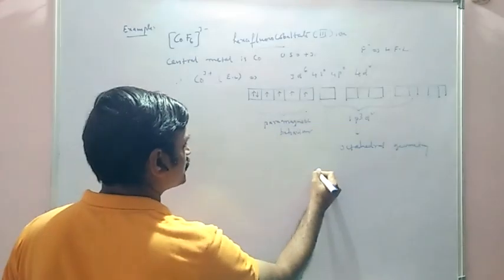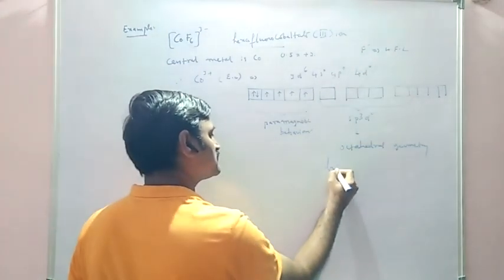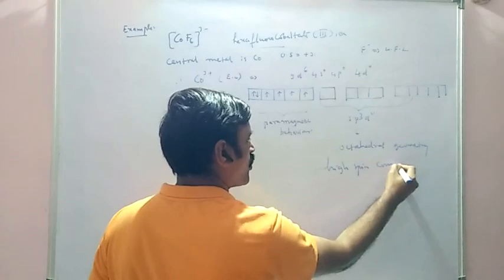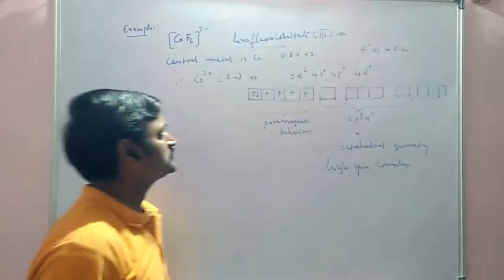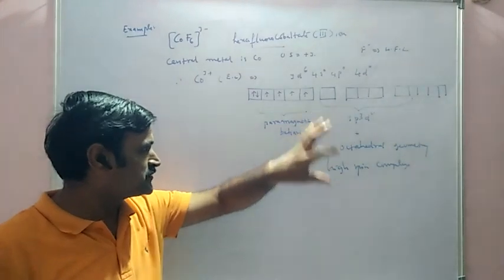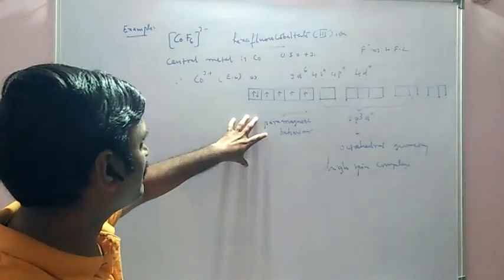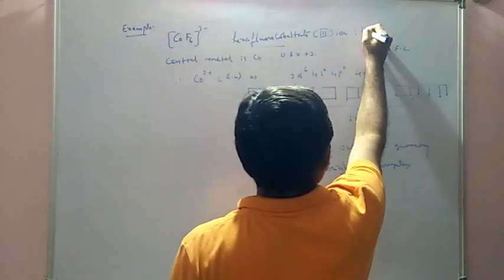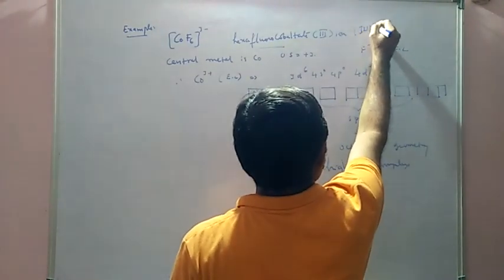That's why this complex is called as high spin complex, also known as high spin complex compound. So this is sp3d2 hybridized, octahedral geometry, high spin complex, paramagnetic behavior, and oxidation state is plus 3. And IUPAC name of this one also we have mentioned.